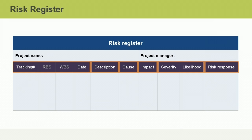The impact column should detail the potential impact of each identified risk on the project. This section of the register may be further divided to detail the impact of each risk on specific project objectives. The severity and likelihood columns indicate the extent to which each risk could impact the project and the probability of the risk occurring. The options for these measures could be classified, for example, as none,